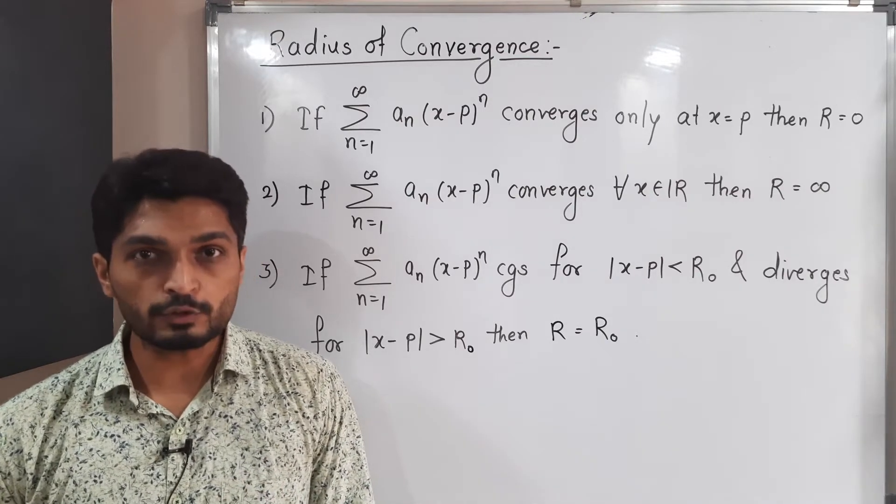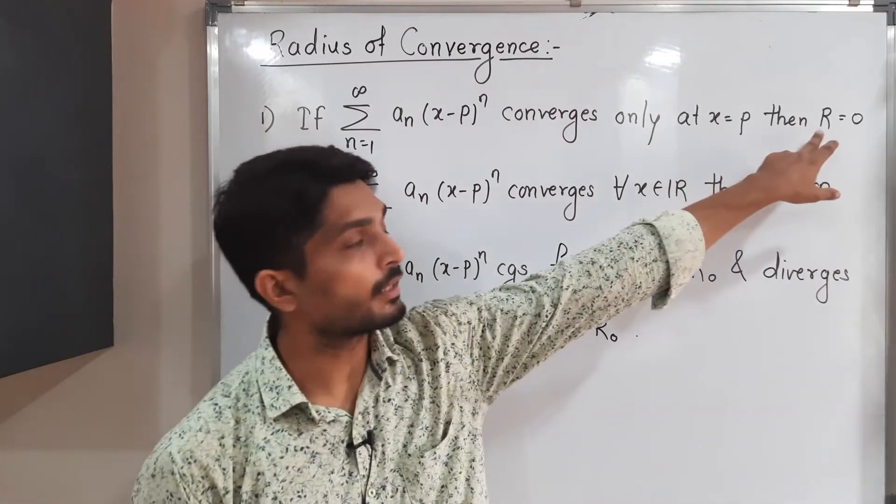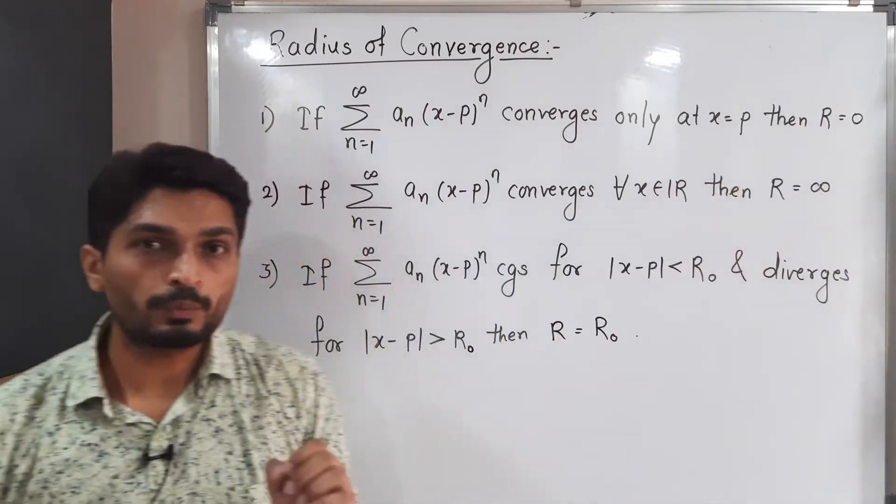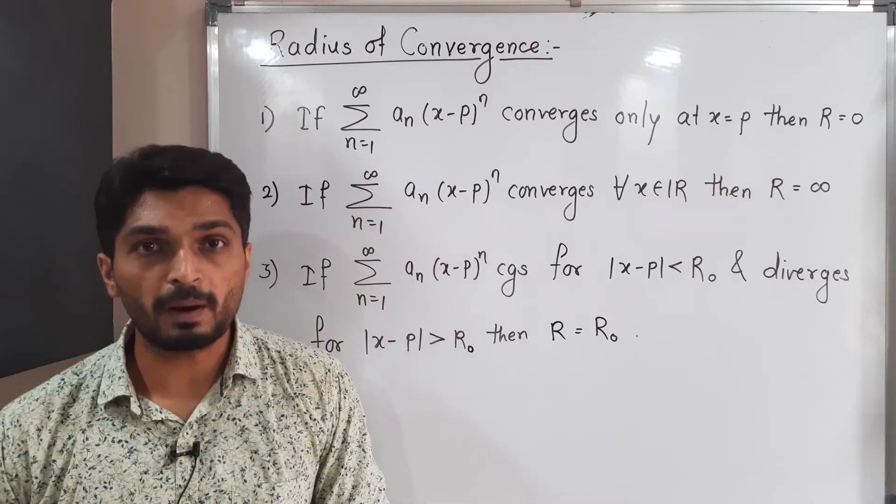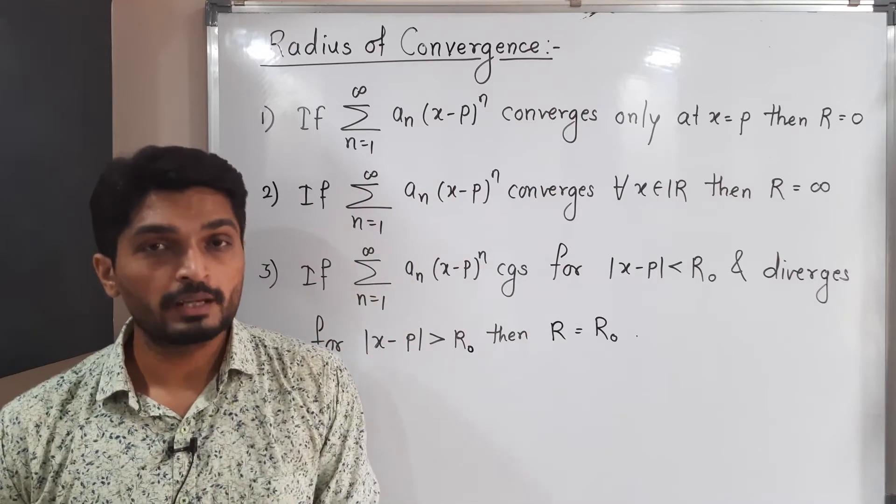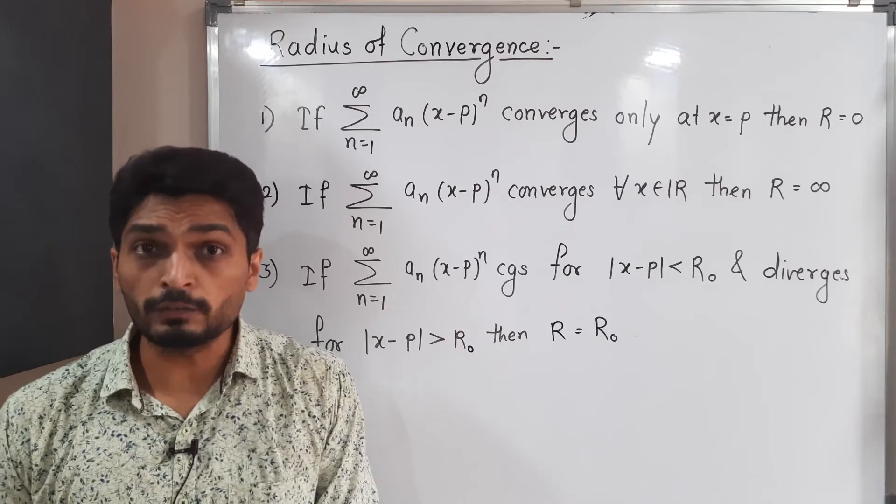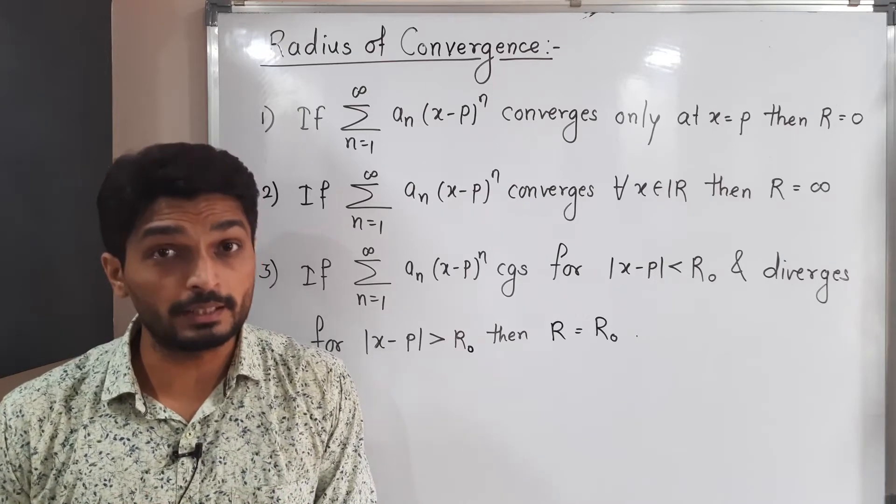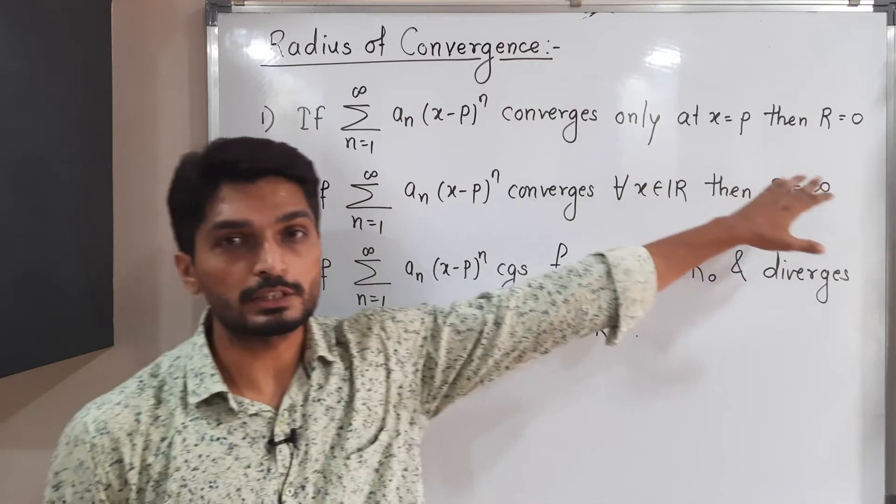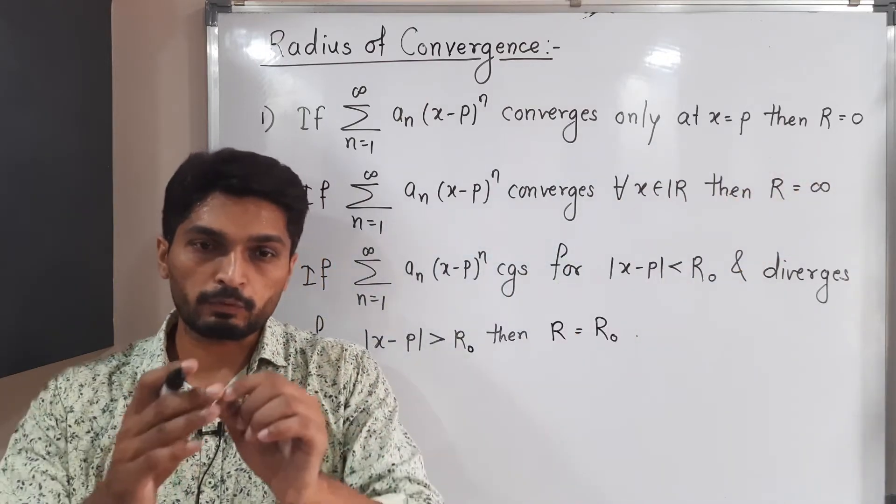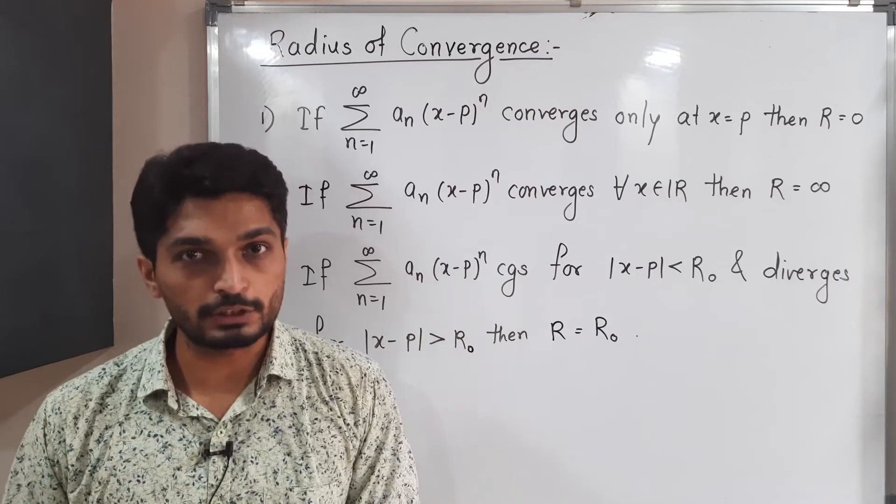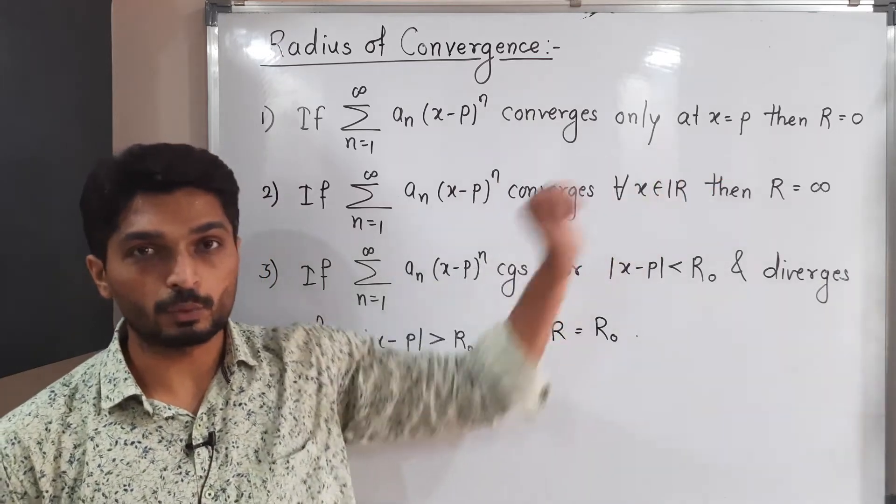We denote radius of convergence by capital R. So when we have a power series like this, summation a_n(x-p)^n, this is a power series around point p. If this power series is convergent only at point p, then its radius of convergence is 0. That means only at point p it is convergent, and for other points the series is divergent. So therefore we say its radius of convergence is 0.